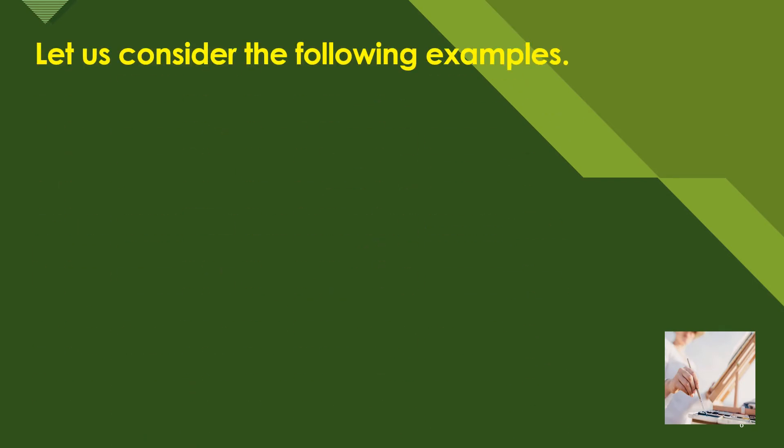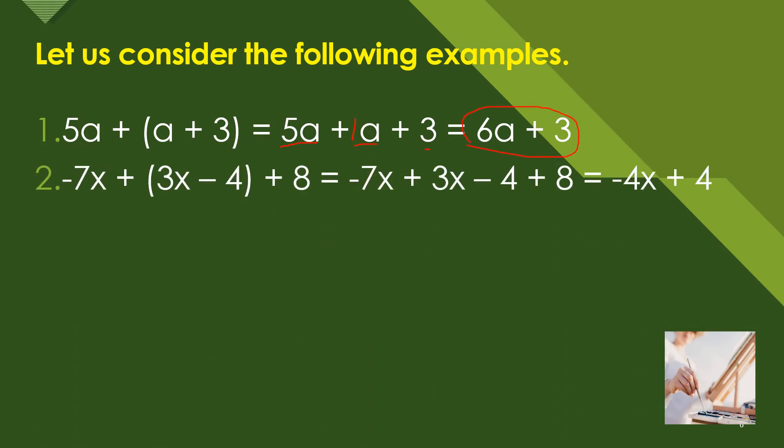Now let's consider the following examples. We have here 5a plus (a + 3). So 5a we copy, and then we put out the a, then 3. Then combine 6a plus 3. It is considered as an invisible one, so we have 5 plus 1 equals 6, so that's why we got 6a plus 3.